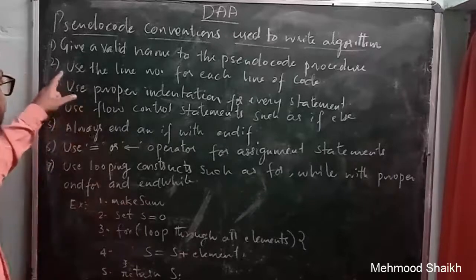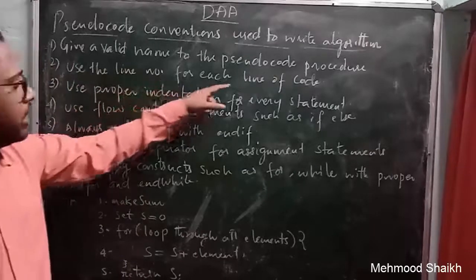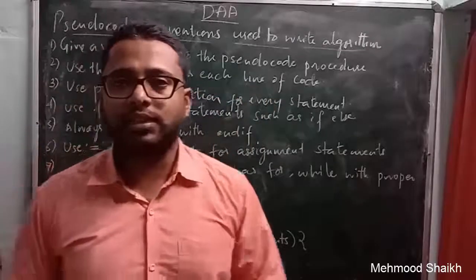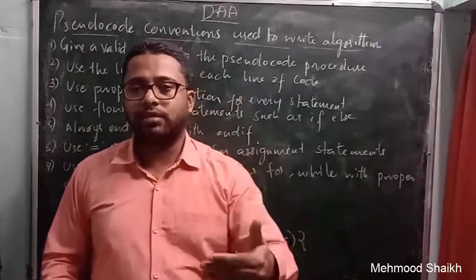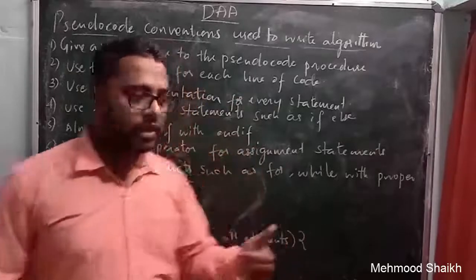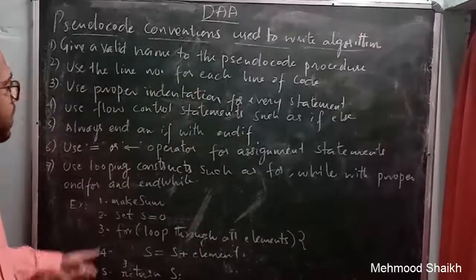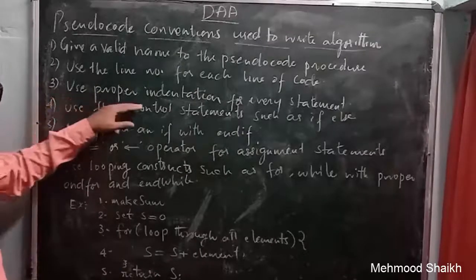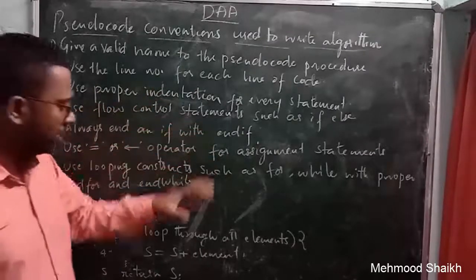The second point says: use a line number for each line of code. Whenever you write a pseudocode, you need to mark each and every line with a line number. The third convention is: use proper indentation for every statement.